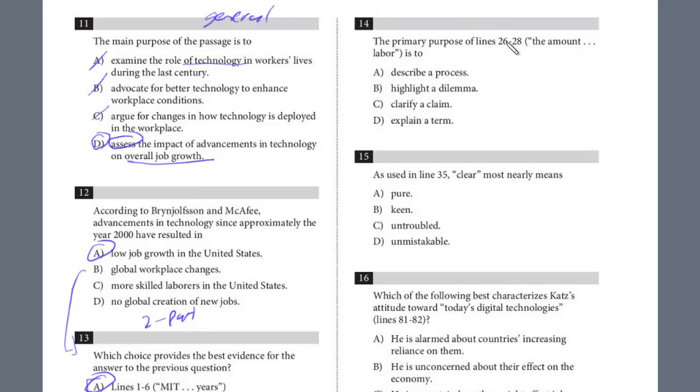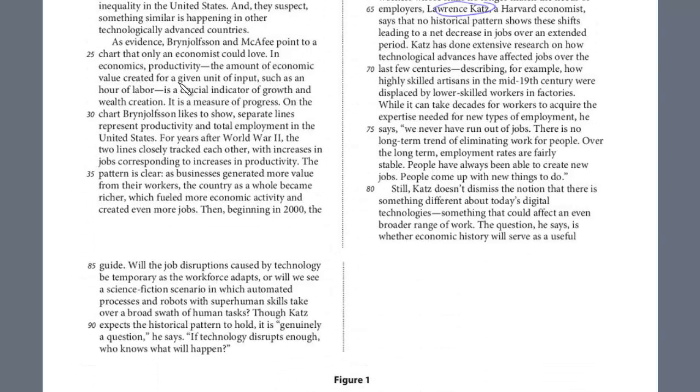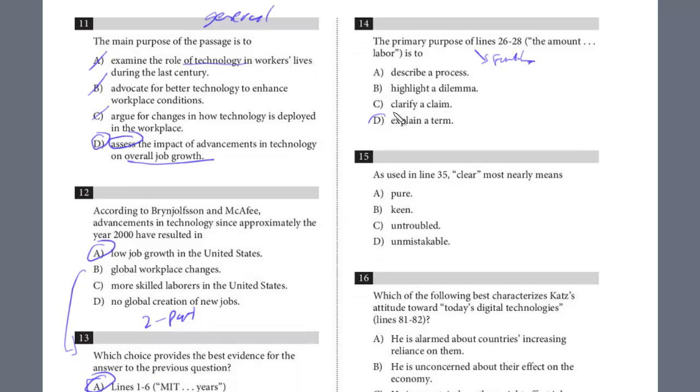All right. Let's take a look at 14. The primary purpose of 26 to 28, and this is what I call a function question. What's the purpose of this sentence? So let's take a look at 26 to 28. So 26 to 28, we have, here it is. In economics, productivity, dash, the amount of economic value created for a given unit of input, such as an hour of labor, dash, is a crucial indicator of growth and wealth creation. So we have productivity, which is really a term, and then we have this nonessential clause. We saw this a lot in the writing section, where it's just giving extra information. It's not crucial, but it helps explain or define, in this case, the term. That's what it does, bound by these dashes. So really what it does is it defines the term. And so it's D. It just explains the term.